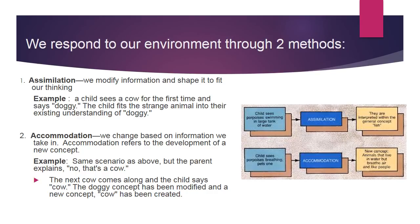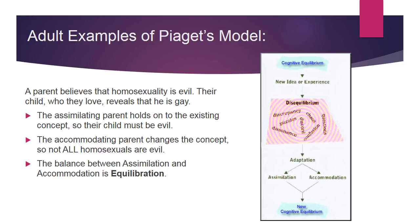This doesn't stop at childhood — it goes well into and through adulthood. For example, a parent believes that homosexuality is evil, and their child tells them they are gay. An assimilating parent holds on to the existing concept that all homosexuality is evil, so now they believe their child is evil. The accommodating parent changes their concept, reasoning that their beloved child is gay, so not all homosexuals are evil. The balance between assimilation and accommodation is equilibration or equilibrium, which allows us to both assimilate and accommodate new information.